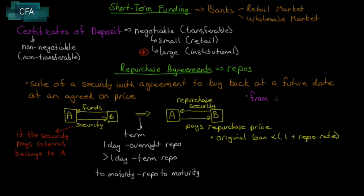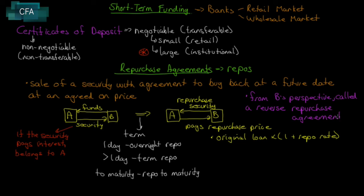From B's perspective, what we've described is a reverse repurchase agreement. The reverse repurchase agreement means you're not selling the security first for money, but borrowing the security instead — you're lending money rather than borrowing it, with an agreement to sell the security back. From B's perspective this is a reverse repurchase agreement, sometimes called a special repurchase agreement.